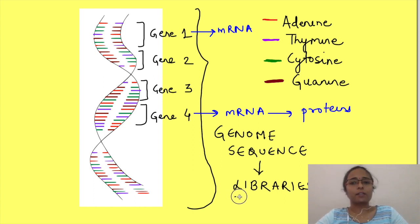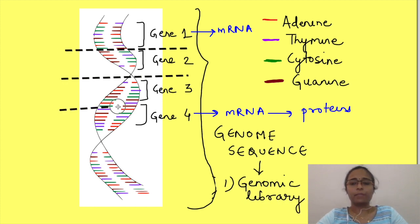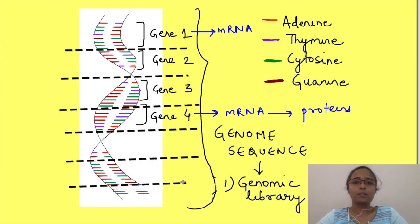Based on this, there are two ways in which gene libraries are maintained. There is one genomic library where complete genome is cut into small fragments and stored, i.e., it includes genes which can be transcribed as well as that cannot be transcribed.